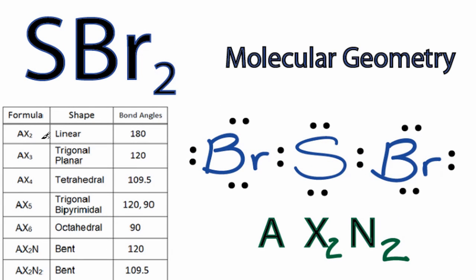So we can go down our table, AX2, three, all up to six, AX2N, and then AX2N2, which is a bent molecular geometry. And the bond angles would be about 109.5 degrees.